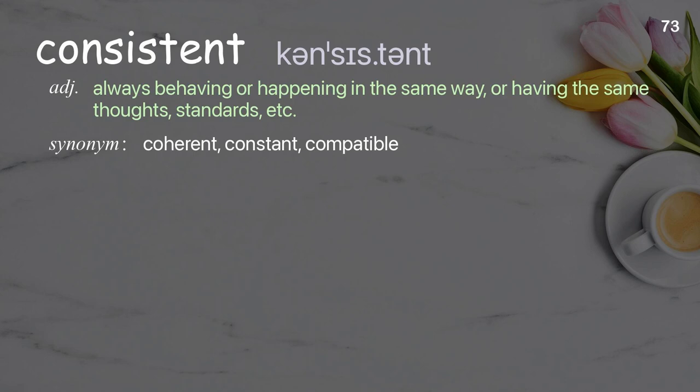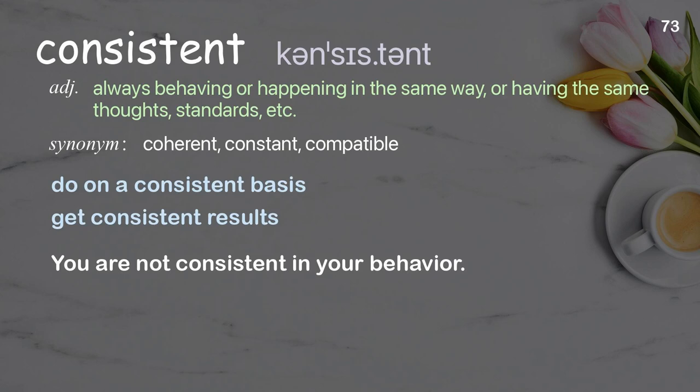Consistent: always behaving or happening in the same way, or having the same thoughts, standards, etc. Examples: do on a consistent basis, get consistent results. You are not consistent in your behavior.